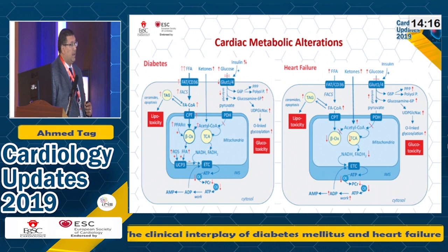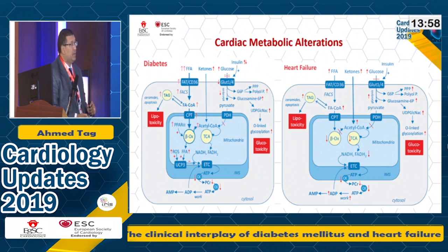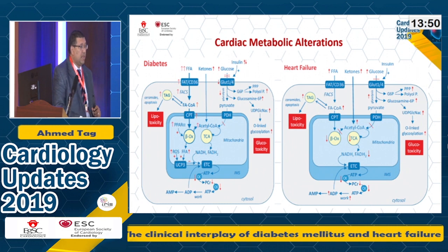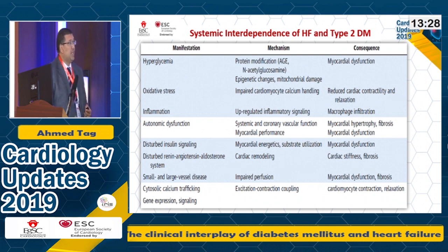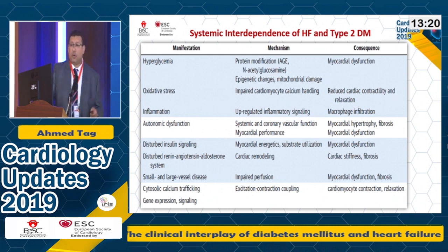The cardiac metabolic alterations in diabetes and heart failure are almost the same. There are increased free fatty acids — more pronounced in diabetes — increased ketones present in heart failure as well, increased glucose levels in diabetics or pre-diabetic heart failure patients, lipotoxicity, and glucotoxicity. These lead to different cascades causing amelioration or deterioration of heart failure. Hyperglycemia, oxidative stress, inflammation, autonomic dysfunction, disturbed insulin signaling, disturbed renin-angiotensin-aldosterone system, and abnormal calcium handling all lead to myocardial dysfunction and further deterioration of heart failure.